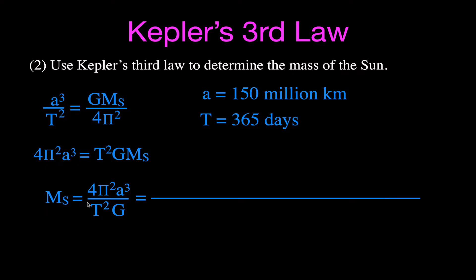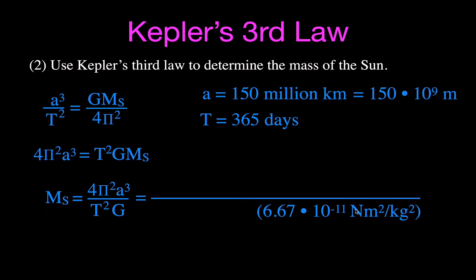Before plugging in values, note that G is 6.67 × 10⁻¹¹ N·m²/kg². Since a newton is kg·m/s², we must convert: 150 million kilometers becomes 1.50 × 10⁹ meters, and 365 days converts to 3.15 × 10⁷ seconds.